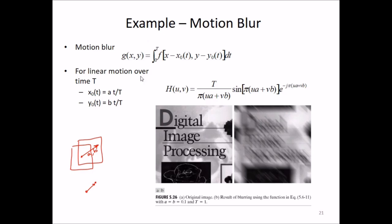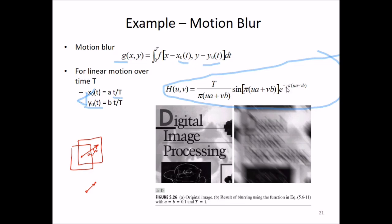For motion blur, g(x,y) is given by the integral of f(x - x0(t), y - y0(t)) dt, where x0(t) represents linear motion over time. The frequency domain expression H(u,v) becomes: sin(π(ua + vb)) × e^(-jπ(ua+vb)) / (π(ua+vb)). Shown here is the original image and the result of applying motion blur using this equation with a = b = 0.1 and T = 1.